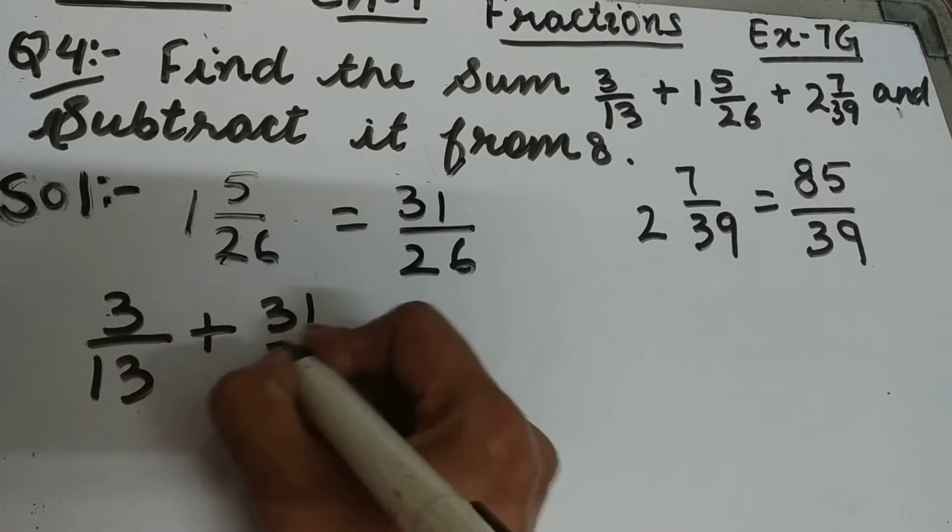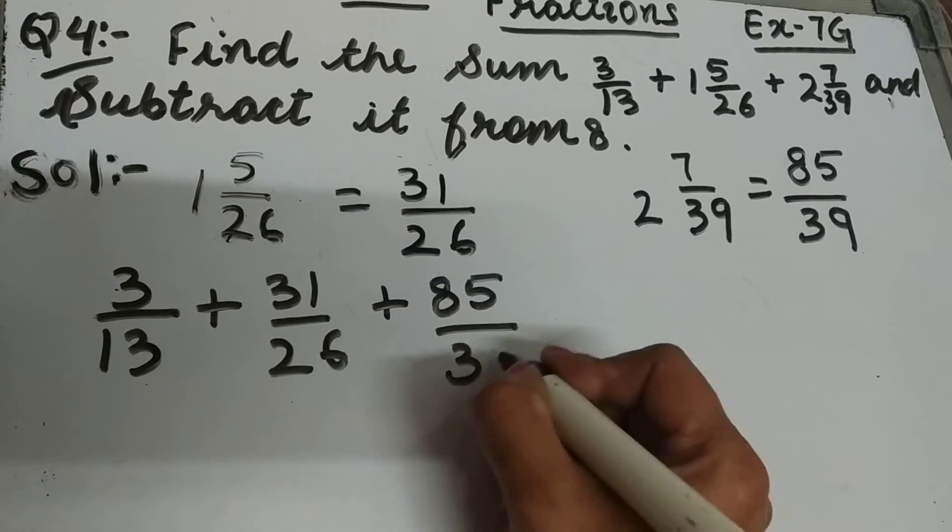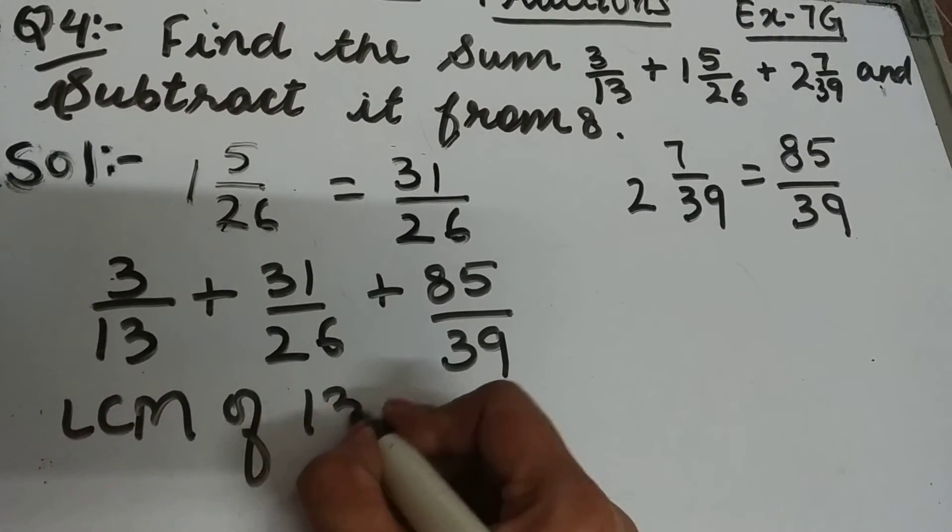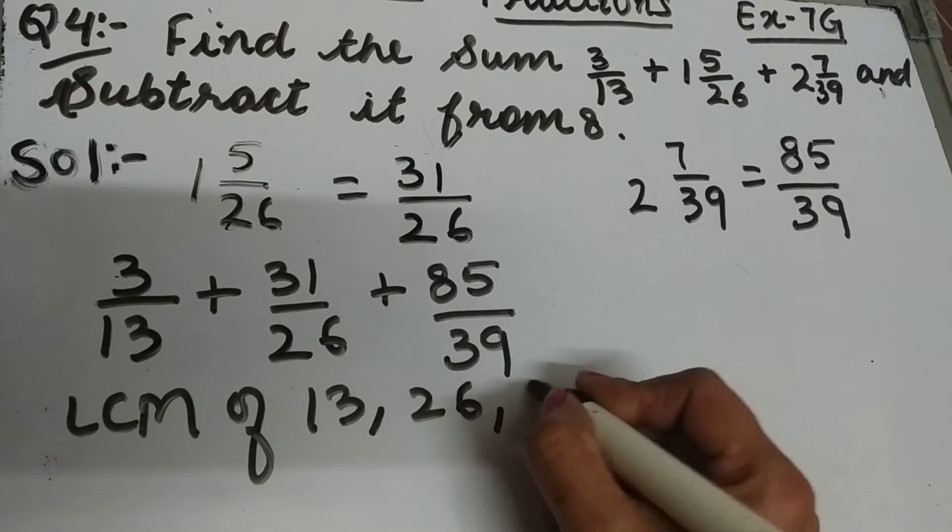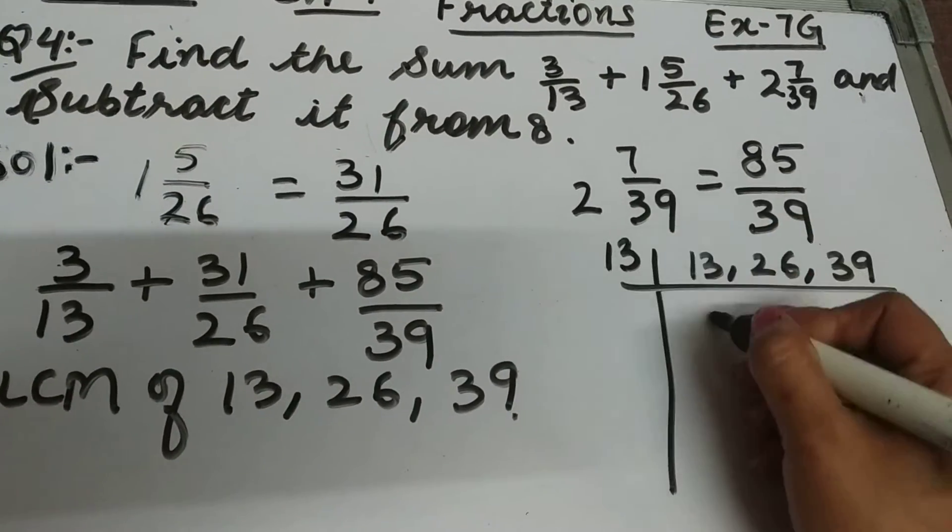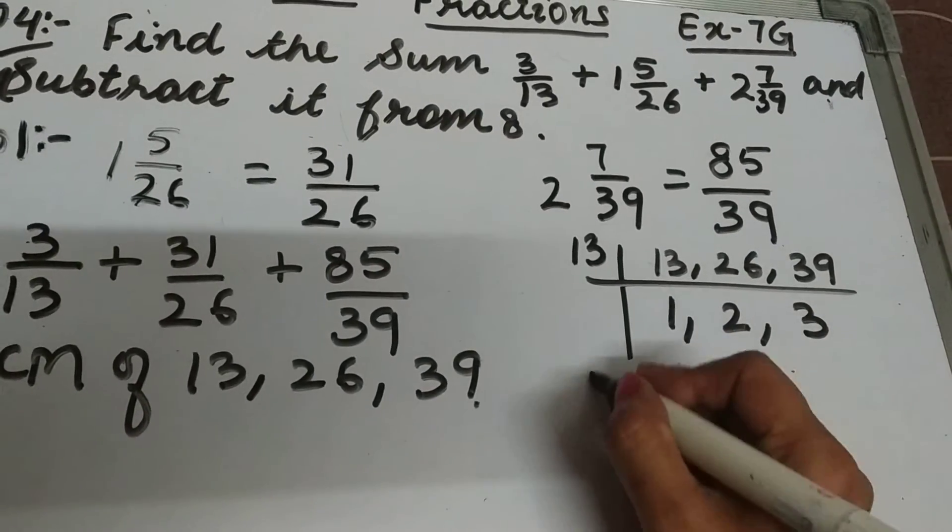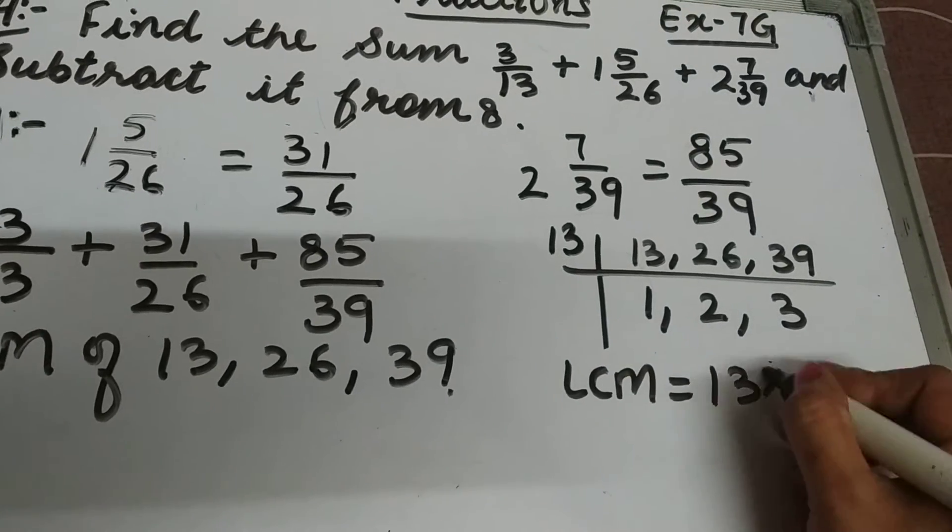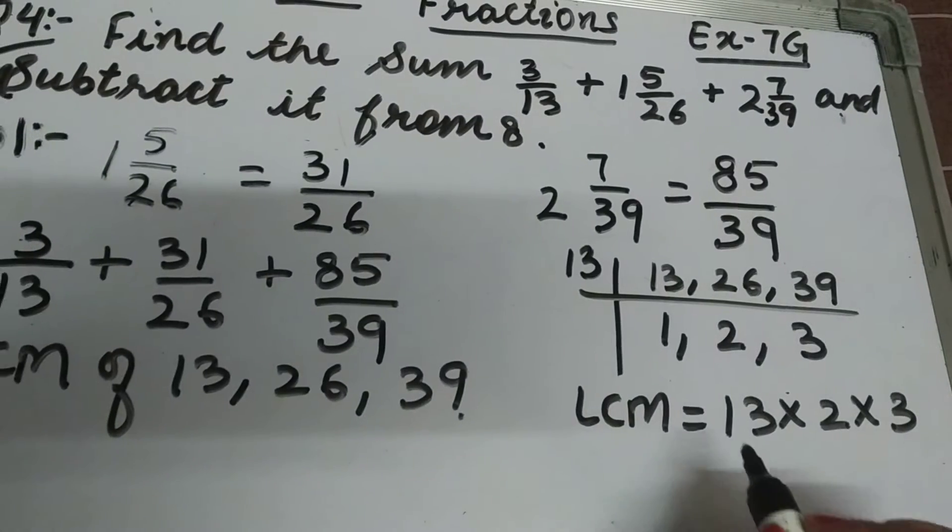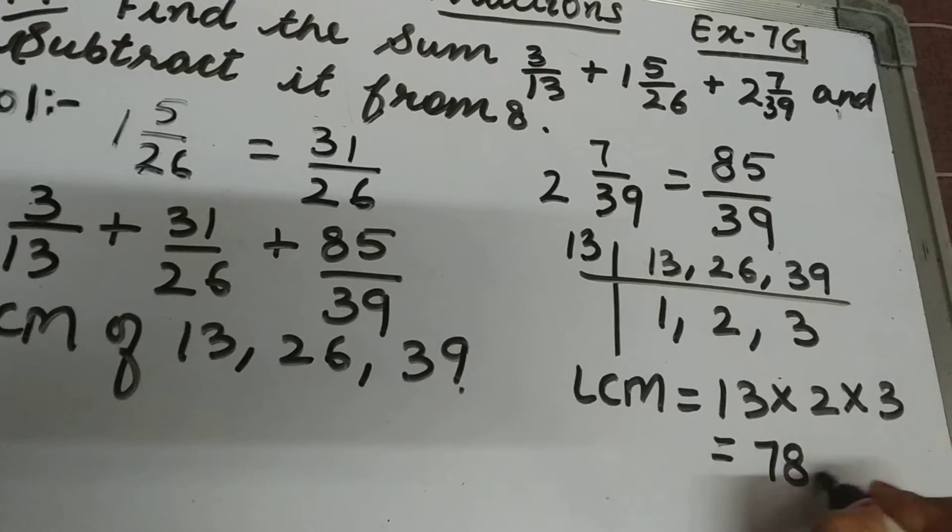Now take the LCM of denominators 13, 26, and 39. So LCM will be 13 ones are 13, 13 twos are 26, and 13 threes are 39. So LCM will be 13 multiply by 2 multiply by 3. So 13 twos are 26, and 26 threes are 78. So LCM of 13, 26, and 39 is 78.